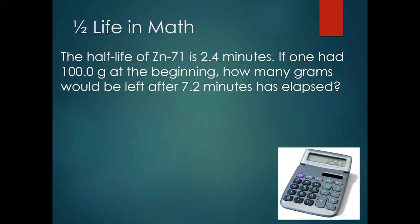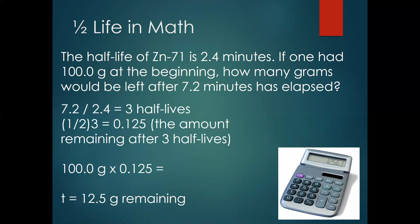The half-life of zinc-71 is 2.4 minutes. If one had 100 grams at the beginning, how many grams would be left after 7.2 minutes had elapsed? 7.2 divided by 2.4 tells us three half-lives have passed. Every time, the sample is cut in half — cut in half once, in half twice, in half three times — so we end up with 12.5 grams remaining. We'll do some more practice problems on that in class.